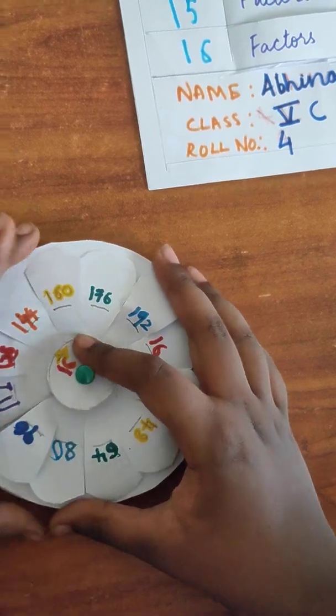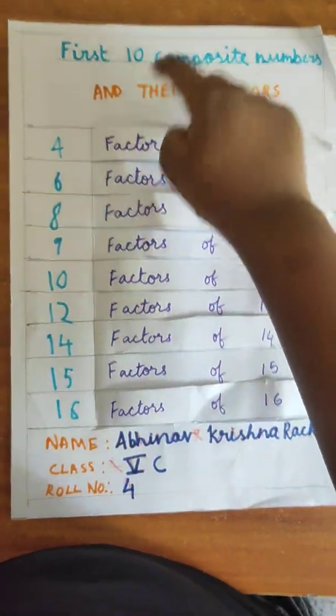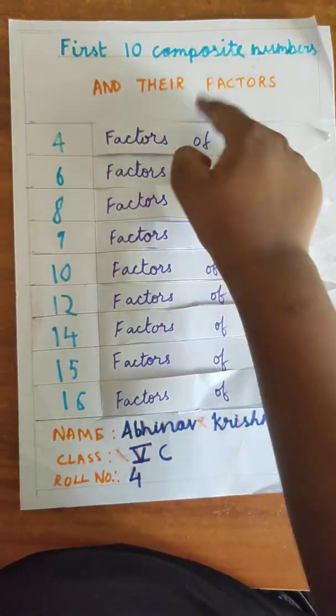On to the next activity. This is the last one. First 10 composite numbers and their factors.